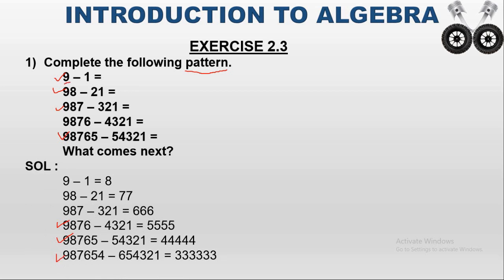The first number is 9, second is 98, third is 987, fourth is 9876, fifth is 98765. So the sixth number is 987654. For the second number in each line: 1, 21, 321, 4321, 54321 — and the last six-digit number is 654321.